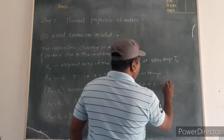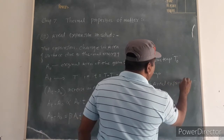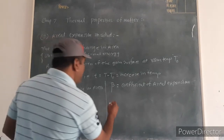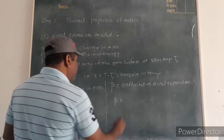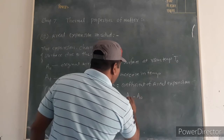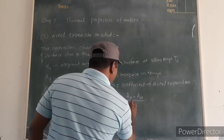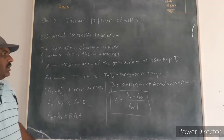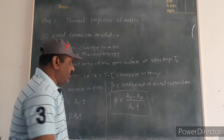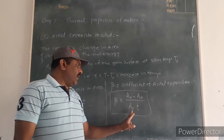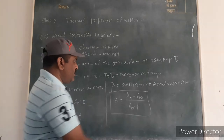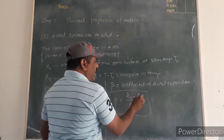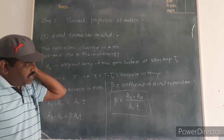That constant beta is called the coefficient of area expansion. Its value is beta equal to AT minus A0, divided by A0 times T. Using this formula we calculate the coefficient of area expansion, where AT is the area at temperature T and A0 is the original area at room temperature.